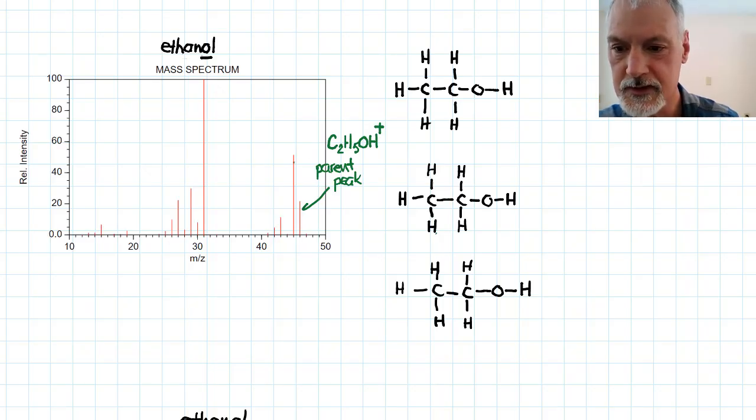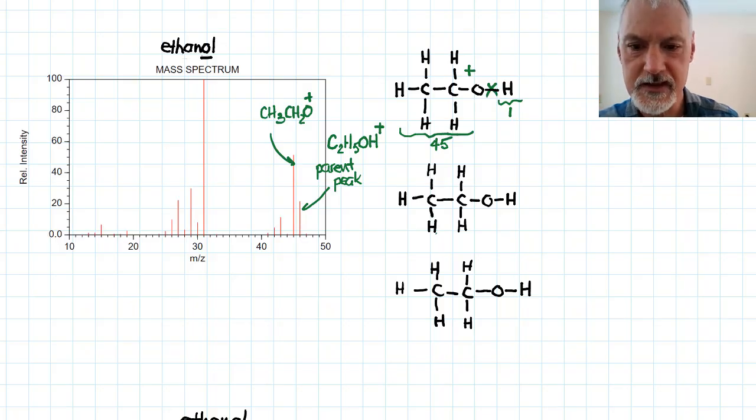The one that's right beside it happens perhaps because the molecule fragmented right there. As a result, this remaining fragment has a relative mass of 45, and the hydrogen just one. So this then possessed a positive charge causing this peak. So I'll write it here as CH3CH2O. That is causing that peak.